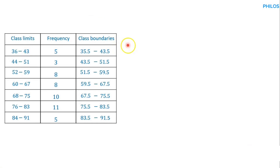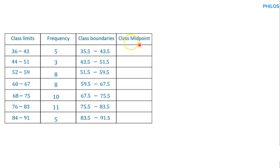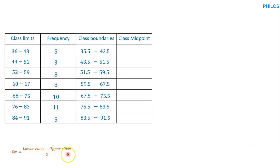Let's create an extra column and name it midpoint or class midpoint. To find the class midpoint, the formula is: Xm (class midpoint) equals the lower class boundary plus the upper class boundary, all divided by two. So for the first class, we add the lower and upper class boundaries together and divide by two.